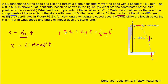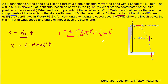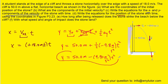Moving to the Y direction: the initial velocity was 0, so that term drops out. We plug in the initial position of positive 50 meters and the acceleration of negative 9.8 meters per second squared. Simplifying by multiplying one-half by negative 9.8, the equation for position in the Y direction as a function of time becomes Y = 50 − 4.9t².